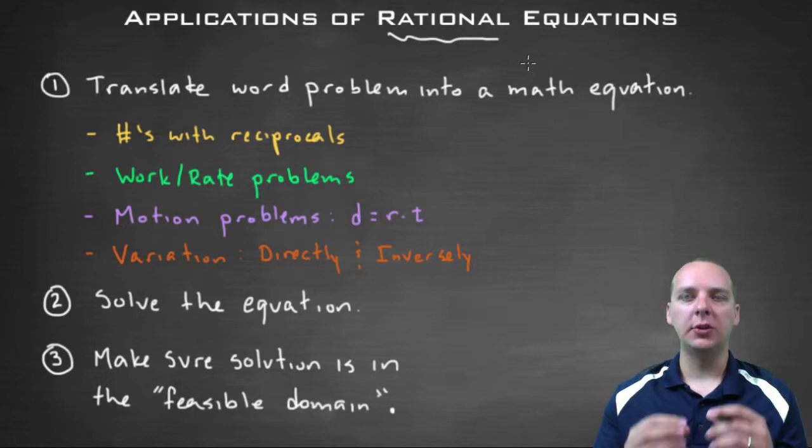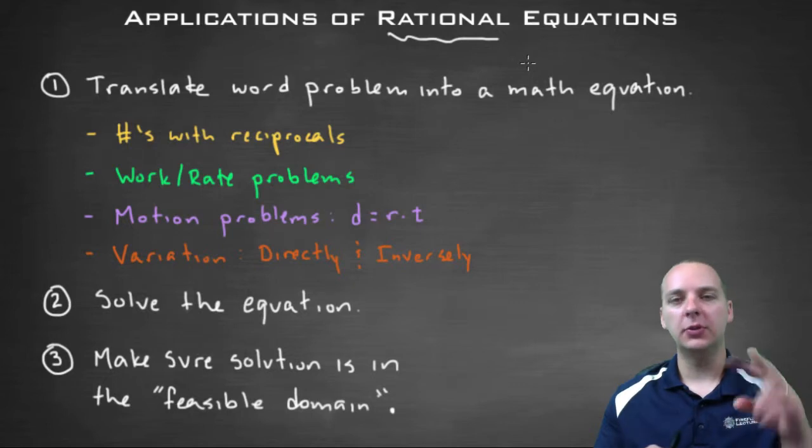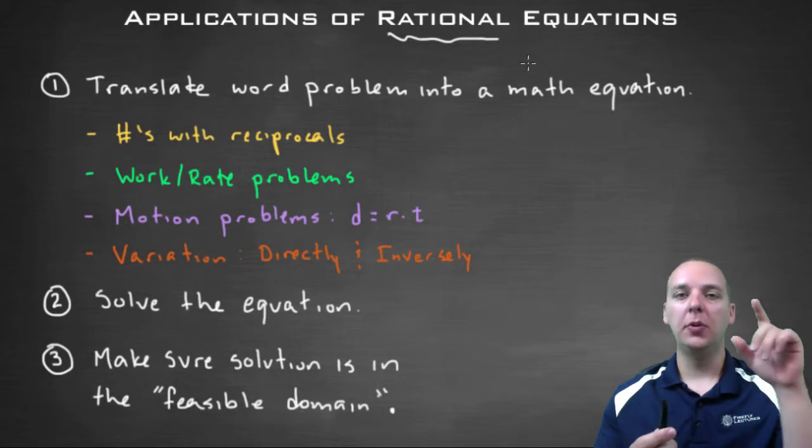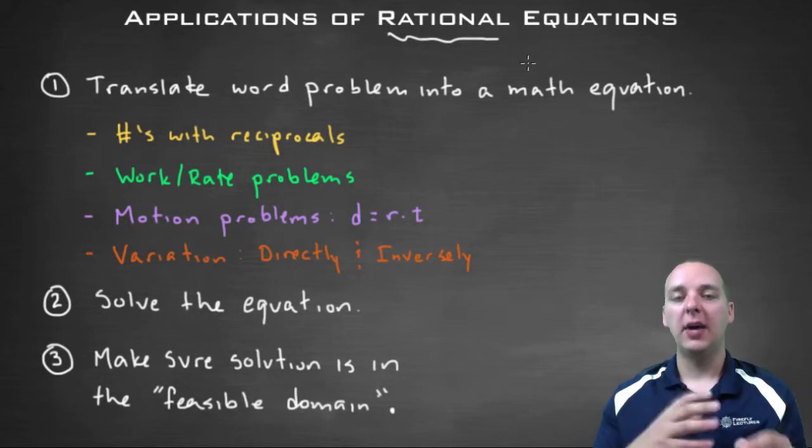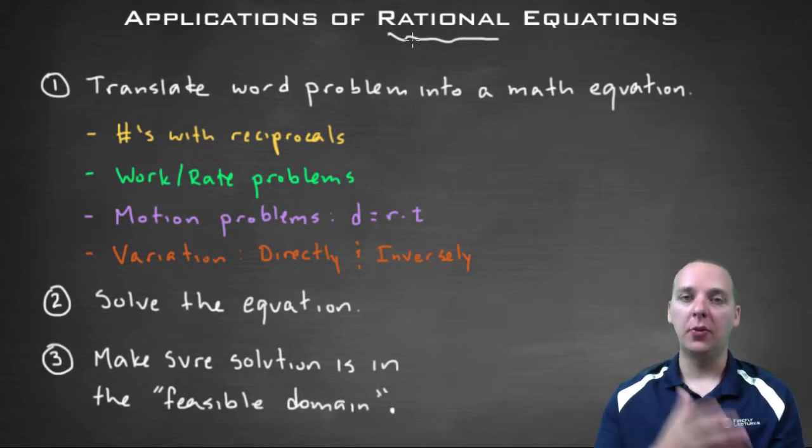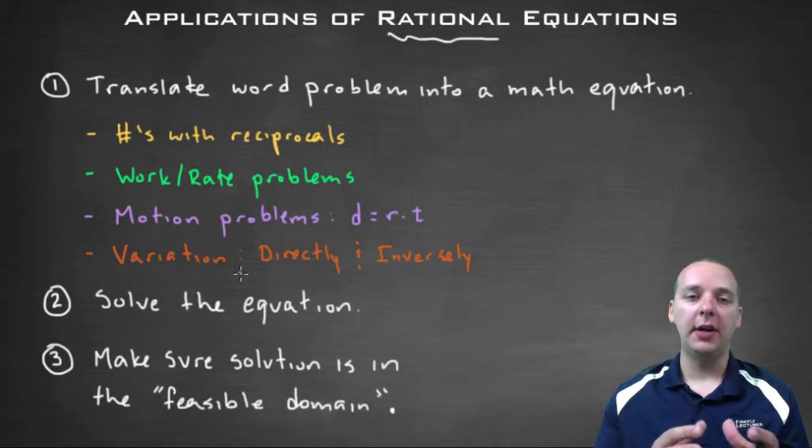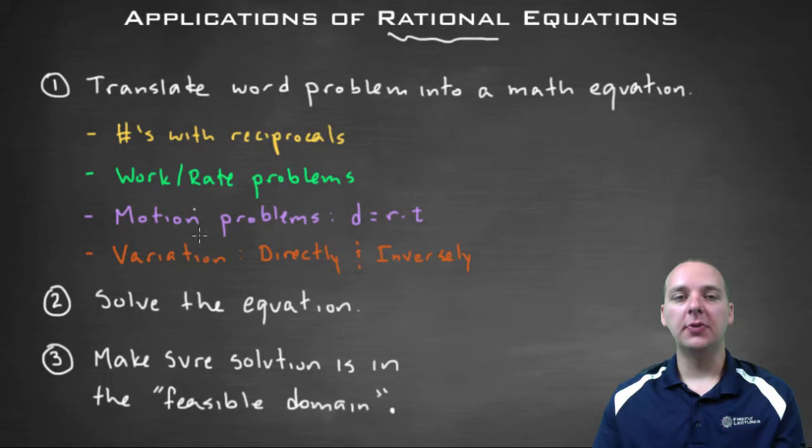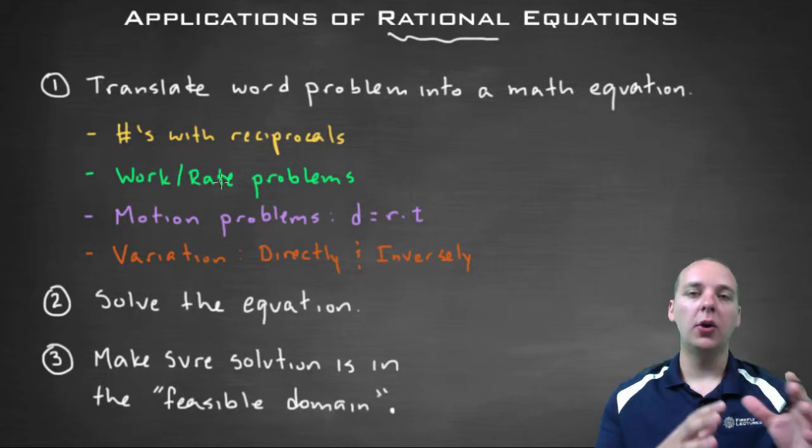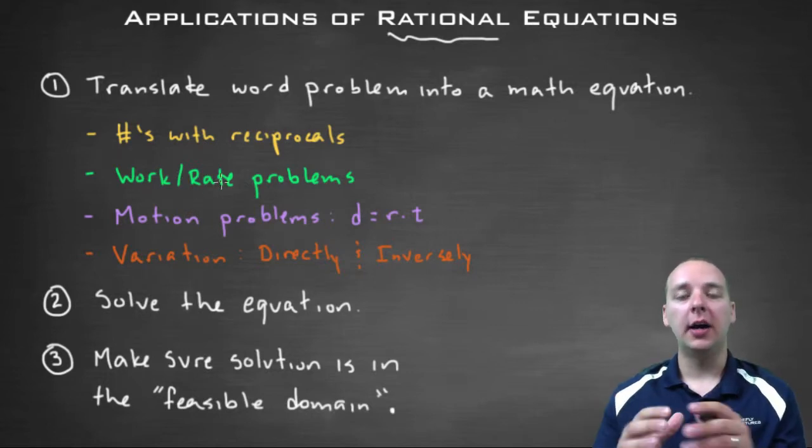We also have some more purely abstract examples dealing with reciprocals of numbers, because when you take a reciprocal of a number, it turns it into a fraction. So if you had x, the reciprocal would be one over x. If you had that in an equation, it would make it a rational equation, of course. And then we also have some variation problems that are pretty common, where you have direct variation and inverse variation. We'll do examples of all of these, and again, all these word problems will turn into rational equations.